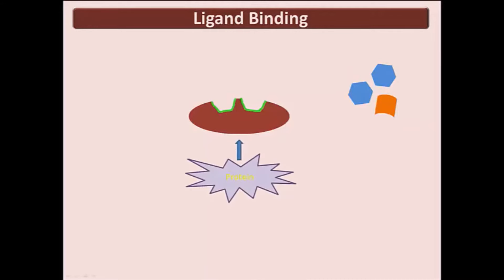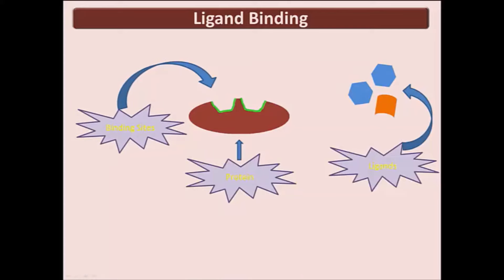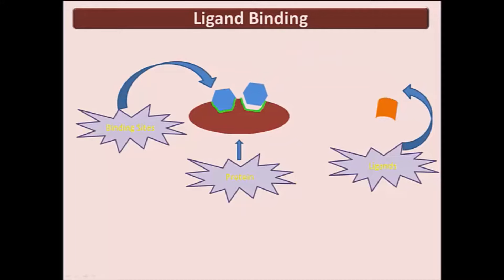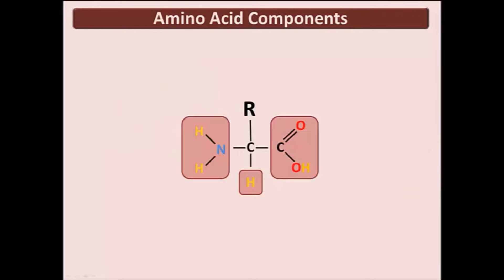The molecules that proteins bind to are called ligands. Proteins have their amino acid side chains structured for spatial and chemical recognition of ligands. The protein location that binds to ligands is called the binding site. There may be multiple binding sites on a protein. This protein has two binding sites — it binds the blue ligand, but it will not bind the orange ligand. Since there is more than one binding spot, this protein can bind both blue ligands. The ability to bind a ligand can determine protein function. Amino acid monomers form polymer structures and are the building blocks of proteins.